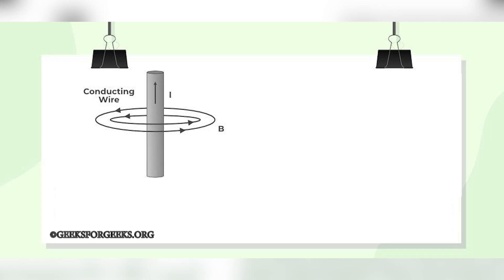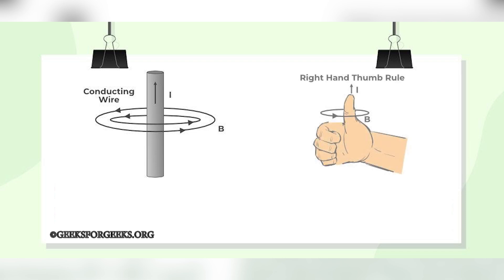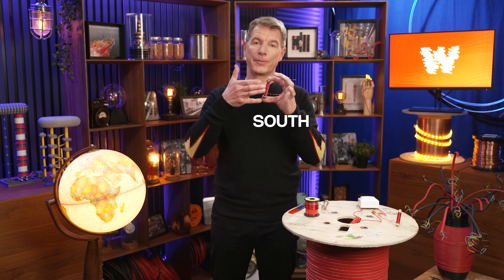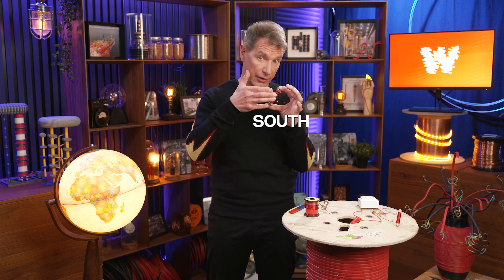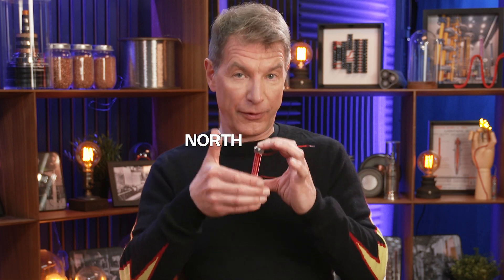Due to Ampere's law, the direction of the magnetic field it produces follows something known as the right-hand rule, which is actually quite easy to understand. If we take our right hand and wrap it around an object with our pinky at the bottom or south and thumb at the top or north.